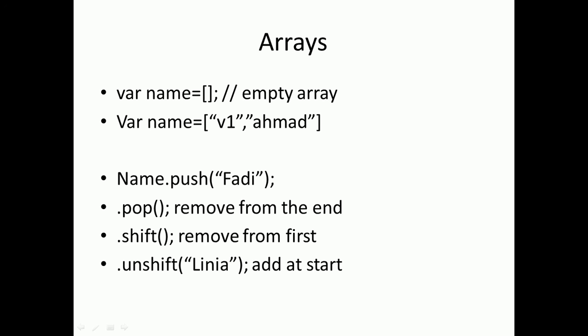For the arrays, when you use array, we have to define sometimes empty arrays. So you type var name equals these two brackets, this means this is an empty array. This is common in JavaScript. If you need, this is a small letter, be careful, var name equals V1 semicolon, okay, Ahmad, or colon, this is called colon semicolon with dot here. So V1 colon Ahmad, that means this array contains two elements. The first one is V1 and the other one is Ahmed.